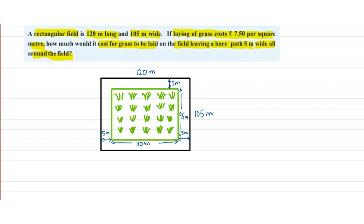So we have to find out the cost of laying grass on the green rectangle. Now we have found the dimensions also of the green rectangle. Can we find out the area of the green rectangle?